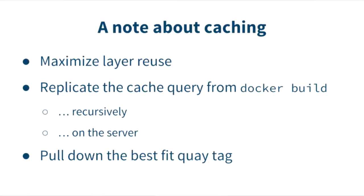A note about caching. Docker supports caching on builds when run locally, keeping local cache information on disk. But as Jake mentioned, we have ephemeral build nodes for security — we can't have your full image history on the build node without downloading the entire repository, which would be ridiculous. So to get the benefits of caching without the downsides, we replicate the cache query that Docker performs from the Docker build code path, but we do it recursively on our own servers remotely. We do this to find the best tag we can use for caching, then pull that best-fit tag to the build worker before the build begins.